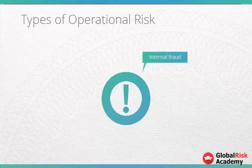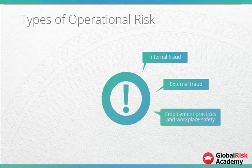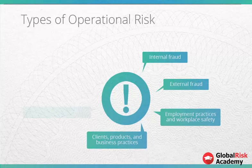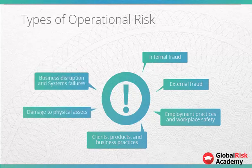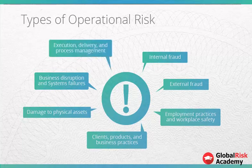BASEL 2 detailed a description of seven types of operational risk: internal fraud, external fraud, employment practices and workplace safety, clients, products and business practices, damage to physical assets, business disruption and system failures, and execution, delivery and process management.